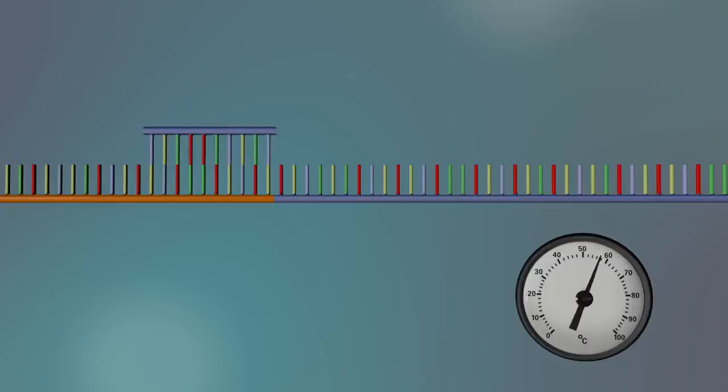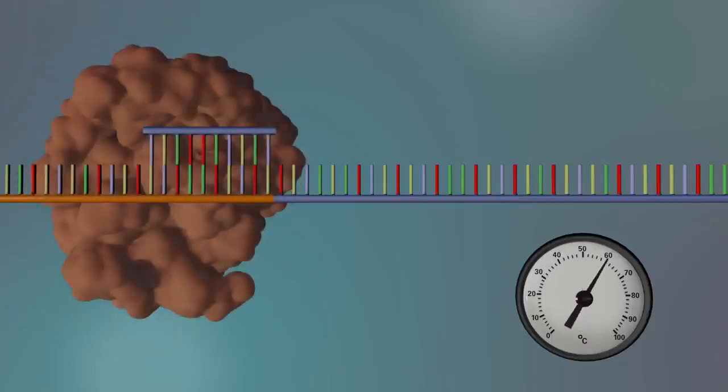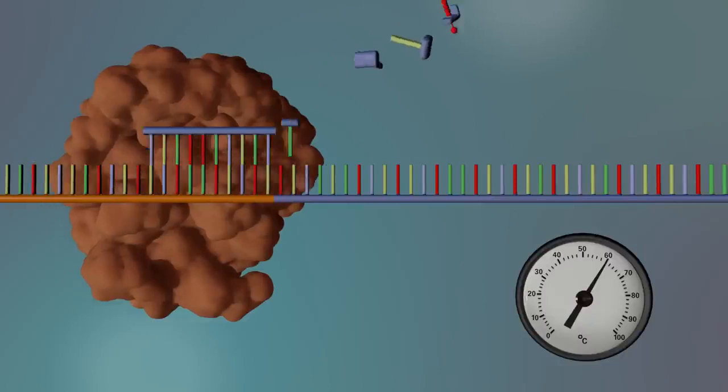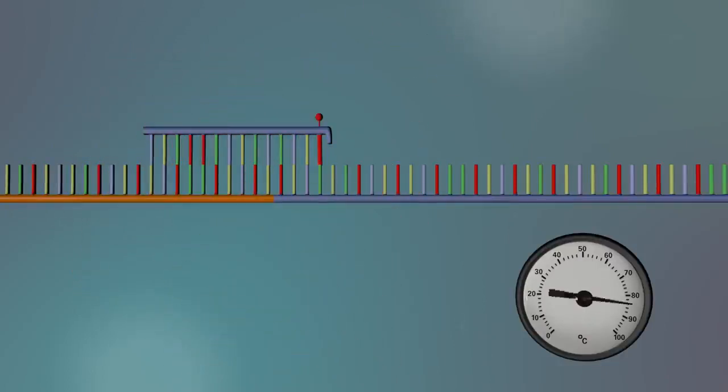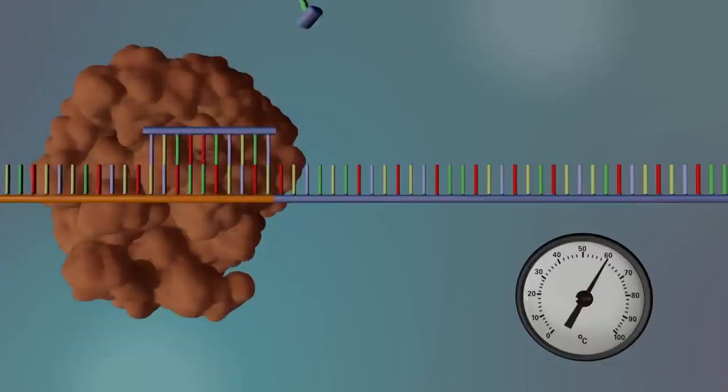This process of heating and cooling is repeated again and again to produce lots of fragments of DNA of different lengths. The length of each fragment depends on when a terminator base got added.